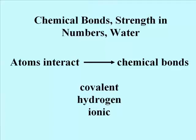When atoms interact, they form one of three major kinds of bonds: covalent bonds, hydrogen bonds, and ionic bonds.